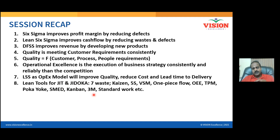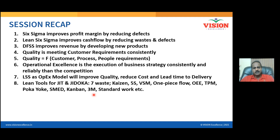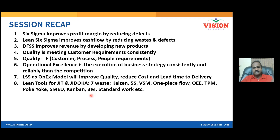The 3Ms are Muda, Mura, and Muri. Muda means waste — non-value-adding activities. Mura means unevenness or variation. Muri means overloading — going beyond capacity. For example, a crane that can lift one ton should not be used to lift 1.5 tons; that leads to failure. When you avoid all three, your business will be at its best: wasteful activities avoided, variation reduced, and overloading eliminated — that is optimization.